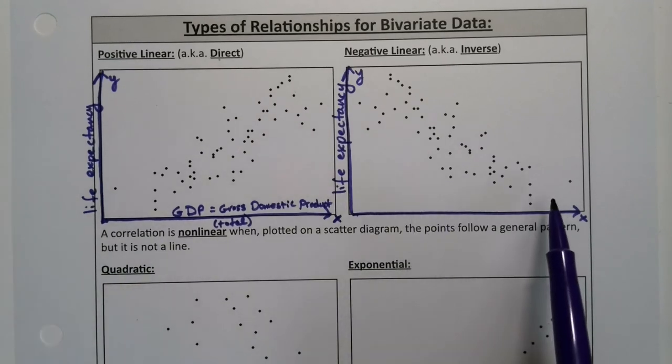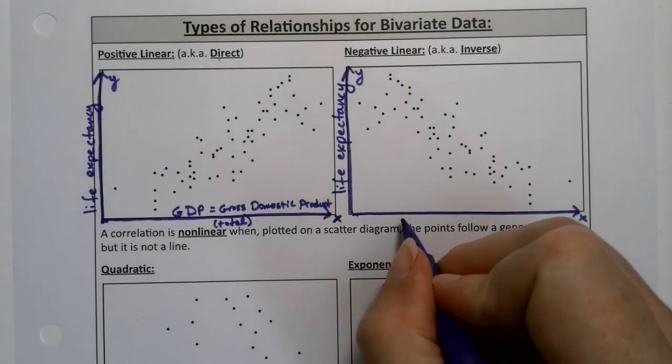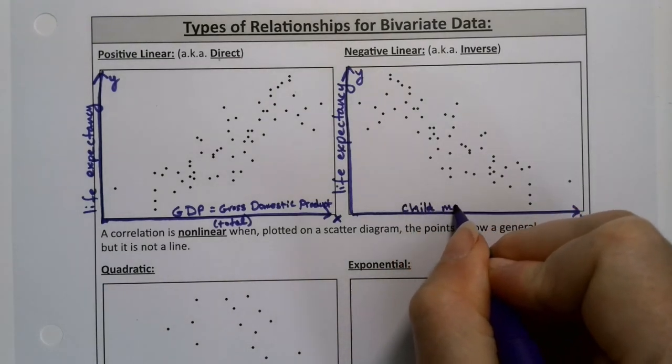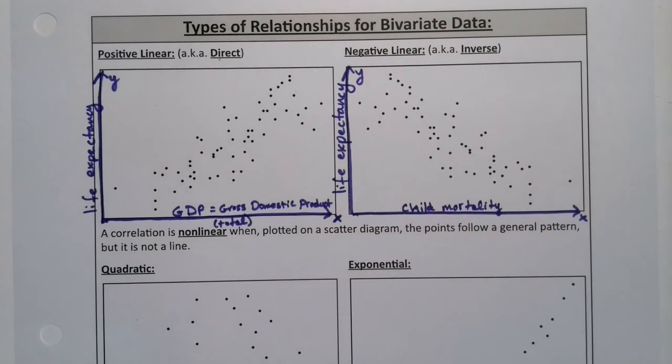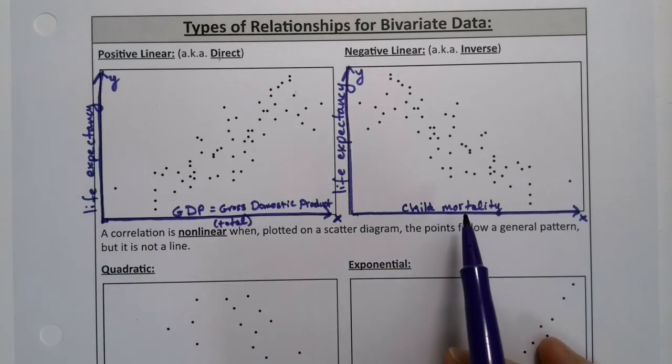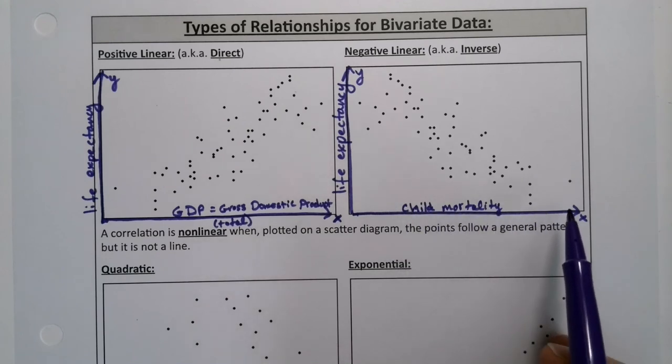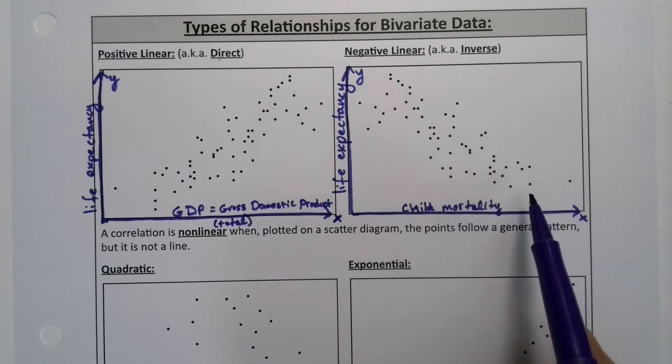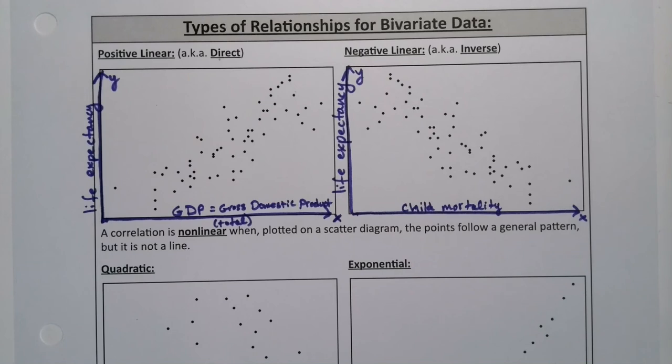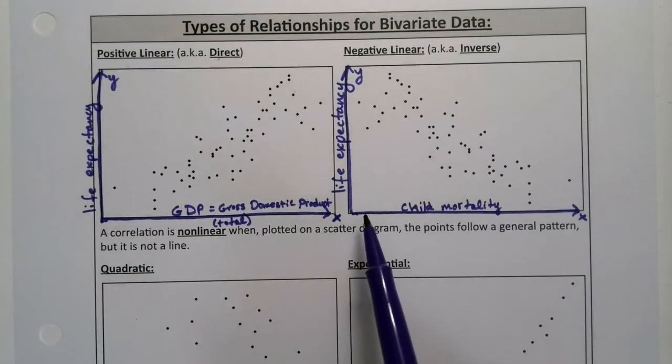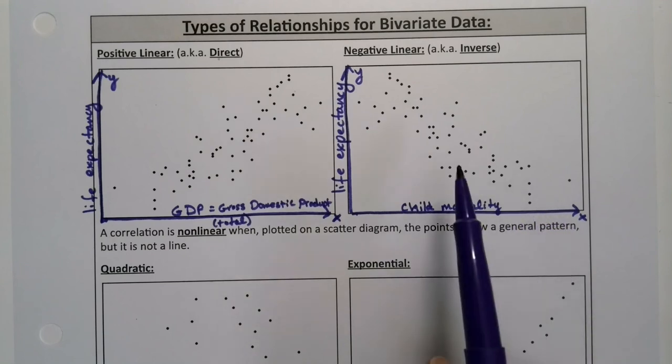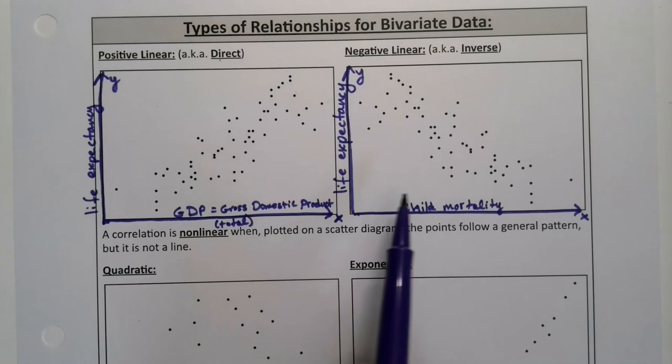What about over here? We already saw births per woman. Let's try something different. What about child mortality? Child mortality is a measurement of how many infants to toddlers, between the ages of zero and five, die before the age of five. Mortality is death. Mort is Latin for death. So the more child mortality, the more infant and child death you have in your country, the lower your life expectancy is going to be. That seems perfectly reasonable. But you could also do births per woman. If fertility rate is higher, life expectancy tends to be lower.